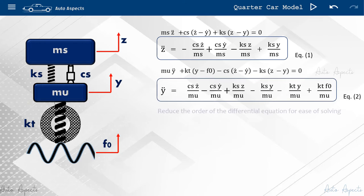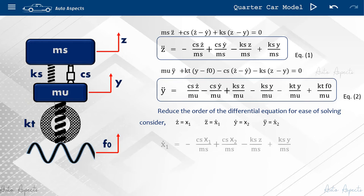For ease of solving, we can reduce the order of the equation through state-space formulation by considering following variables. Then equation 1 is re-written as equation 3, while equation 2 is re-written as equation 4.